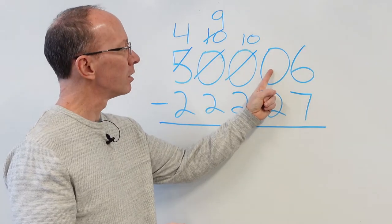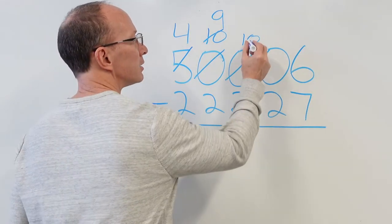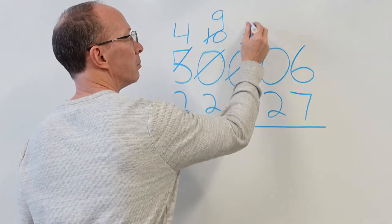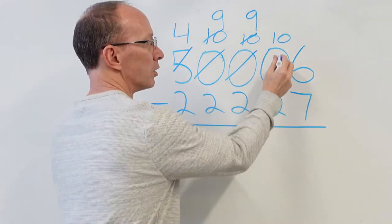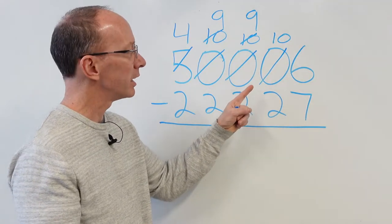Same thing with this zero right here. Hey, can I please borrow one? Sure. So cross out the ten here. Make that a nine. This becomes a ten. Don't forget to put the line through the zero there.